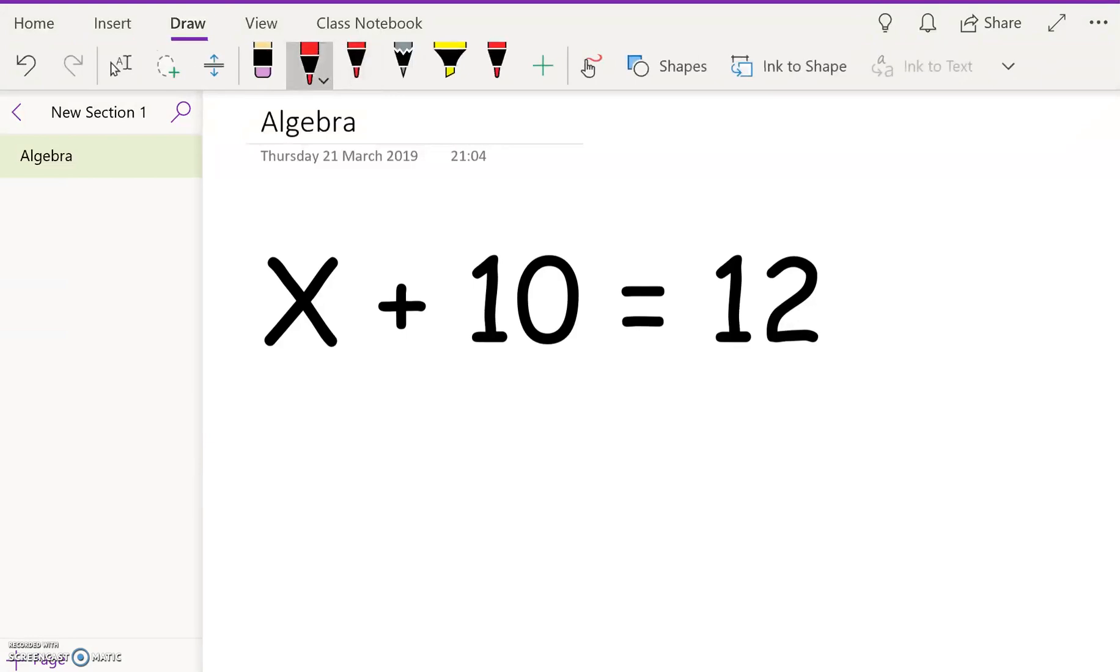To solve the equation, I'm going to get rid of the 10 beside the X, so I'm going to minus 10 on the left hand side and also of course I have to do it on the right hand side.